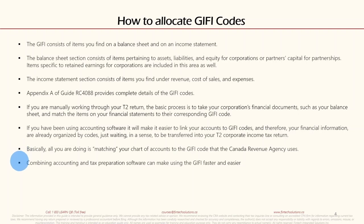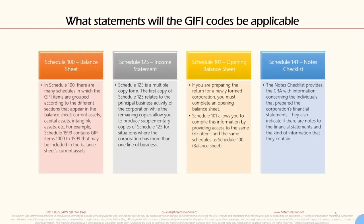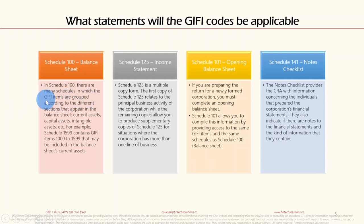Now let's look at what statements the GIFI codes are applicable to. The most important and universally used are Schedule 100, which is the balance sheet, and Schedule 125, which is the income statement. In Schedule 100, there are many schedules in which GIFI items are grouped according to the different sections that appear in the balance sheet — current assets, capital assets, intangible assets, etc. For example, Schedule 1599 contains GIFI items 1000 to 1599 that may be included in the balance sheet's current assets.